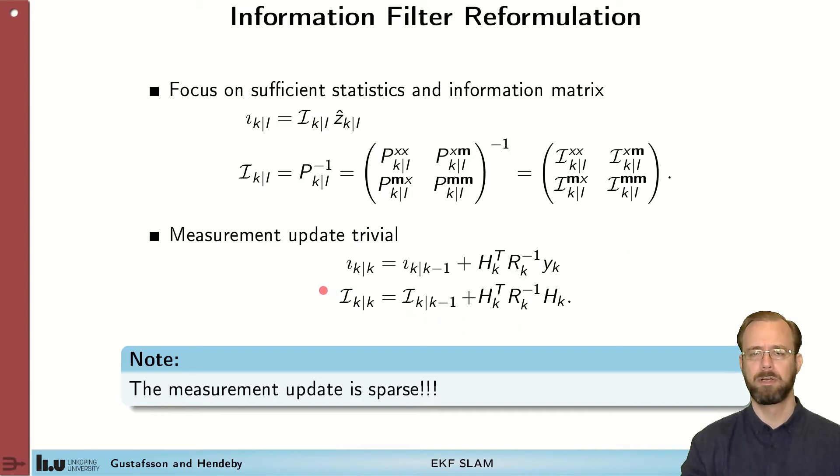Even here, it's beneficial for the SLAM problem because if H is thin, as is the case if we only observe some of the landmarks in our map, this becomes a low rank update which only affects a few elements in the information matrix. Typically those related to the observed landmarks and the pose of the sensor platform. So compared to the update in the covariance based Kalman filter which touched all the elements in the covariance matrix, this only touches a few of them which makes the computations much more efficient.